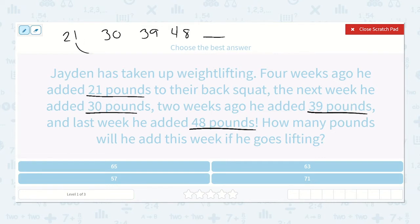So 21 to 30, how much do we add to get from 21 to 30? 21 to 30 would be 9, plus 9. Is that the same here, 30 to 39? Yeah, absolutely, because I know 30 plus 10 would be 40, so one less would be 39. Plus 9. And then from 39 to 48, that is also plus 9.